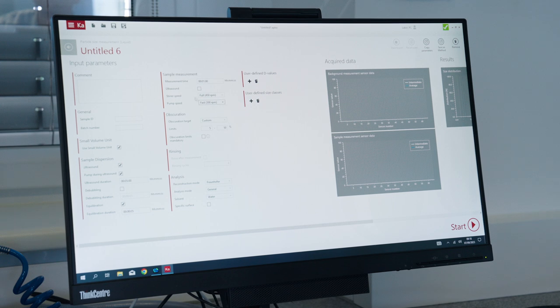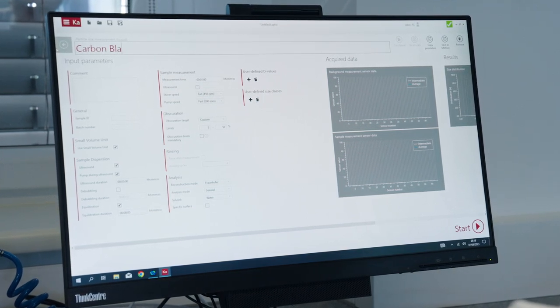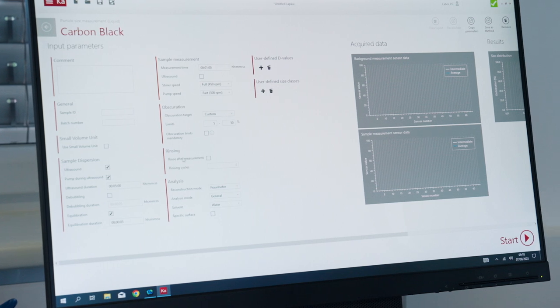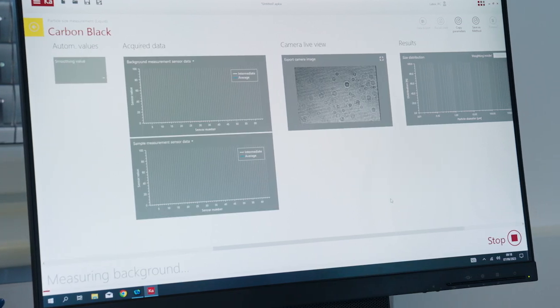Once you select the analysis mode in the software, in this case wet, you move to select the reconstruction mode, then the type of materials you are analyzing. The analysis starts with a background measurement first.